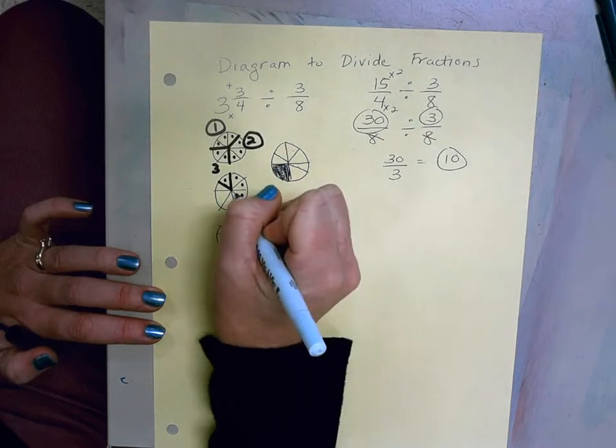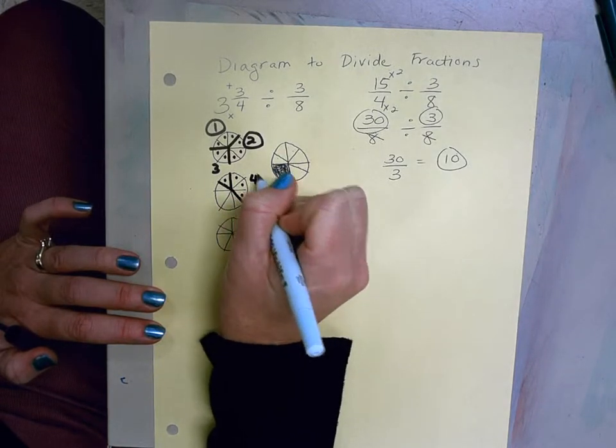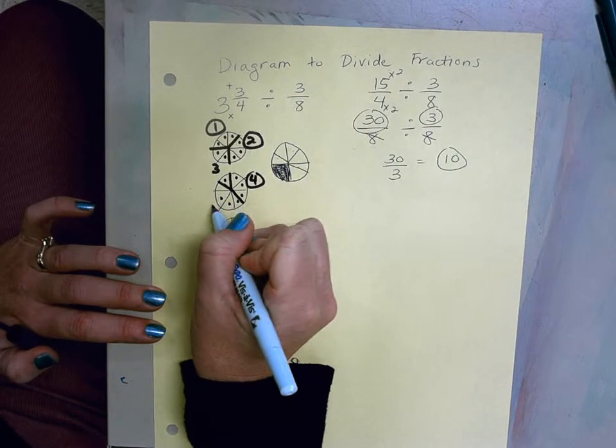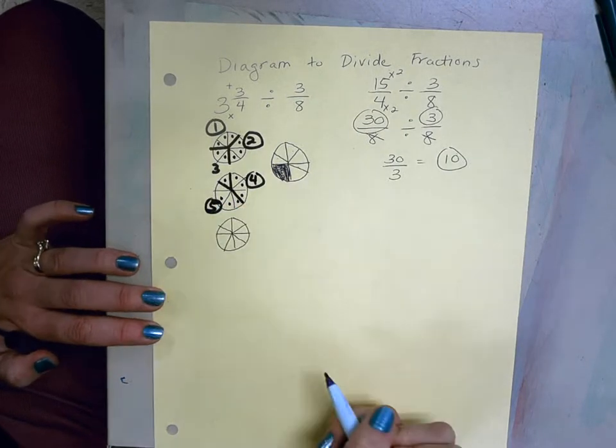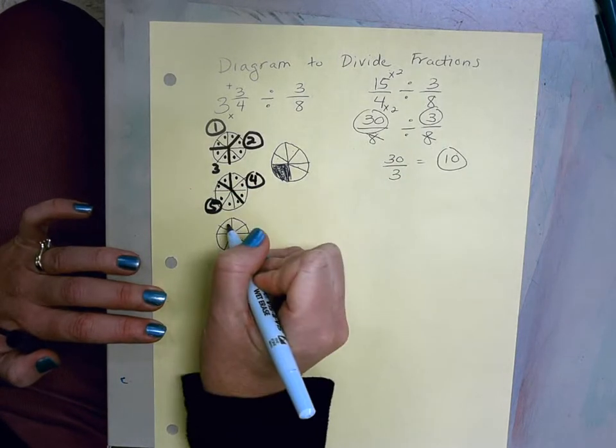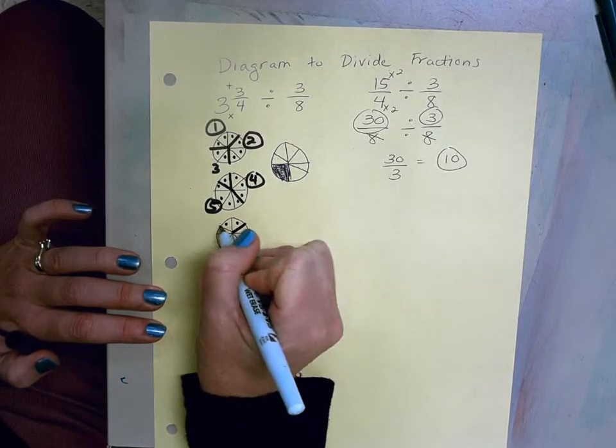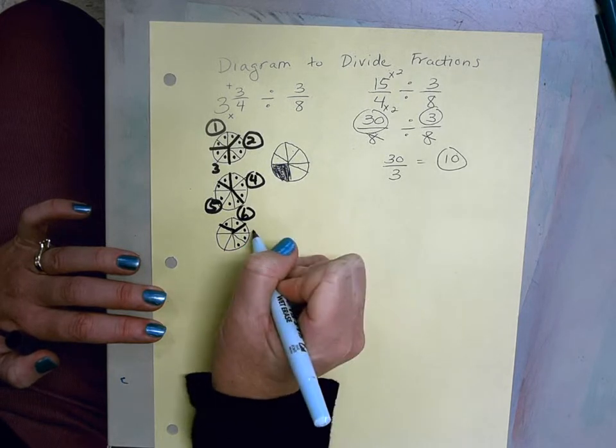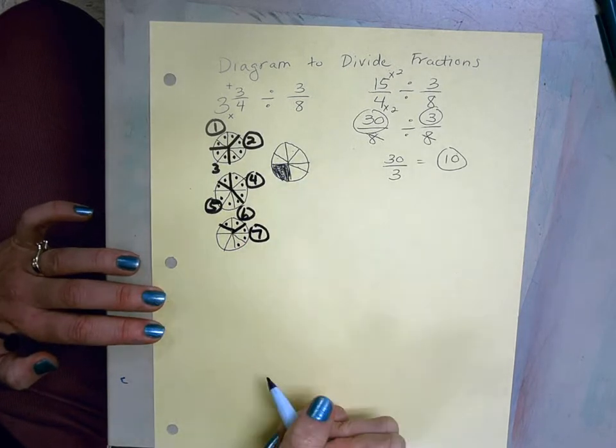1, 2, 3. That's a fifth section of 3/8. 1, 2, 3. That's a sixth section. 1, 2, 3. That's a seventh group of 3/8.